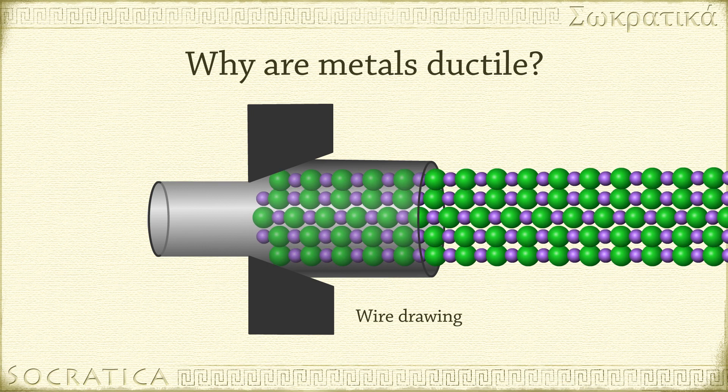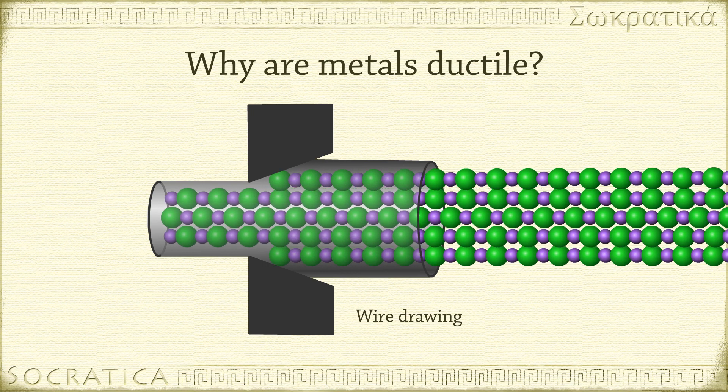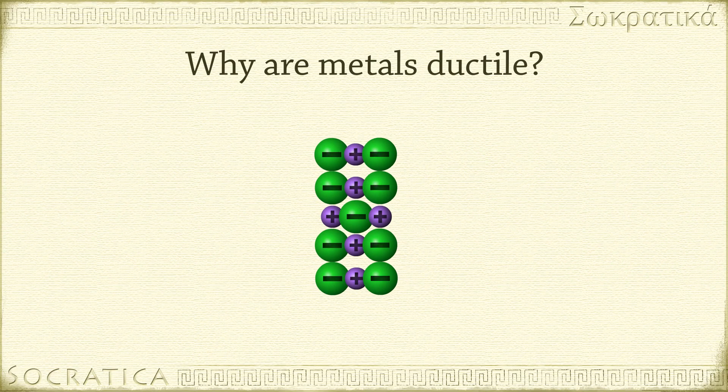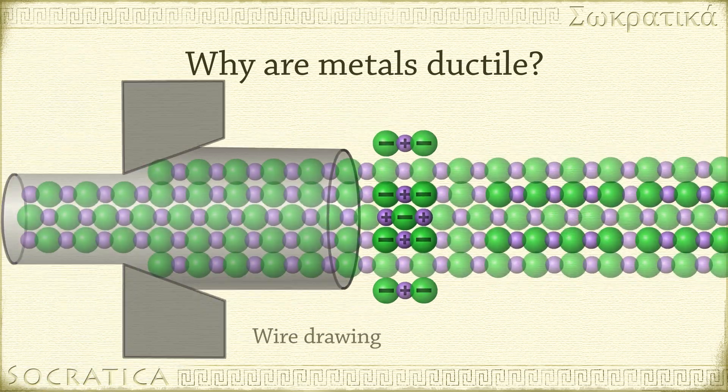Ionic compounds are not ductile, for the same reason they are not malleable in general. If an ionic compound is forced into a long cylinder, it breaks apart because of the repulsion of like ions.